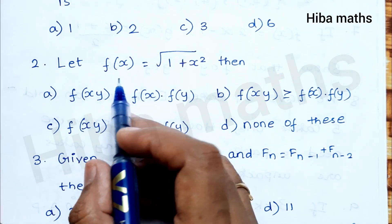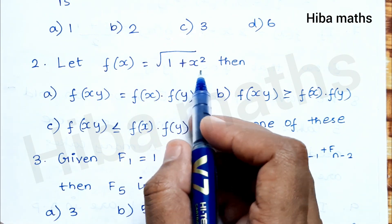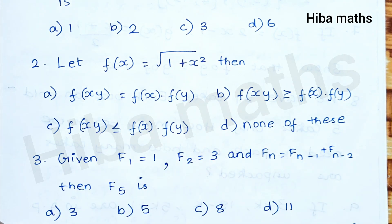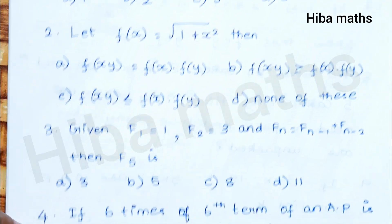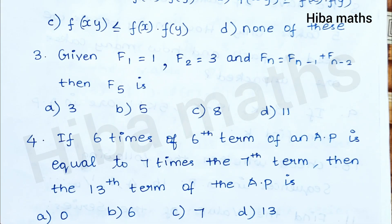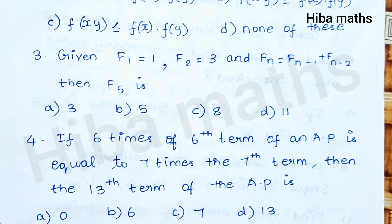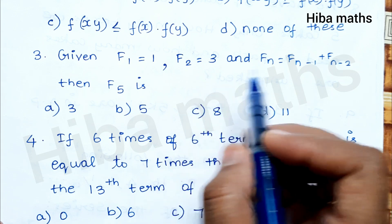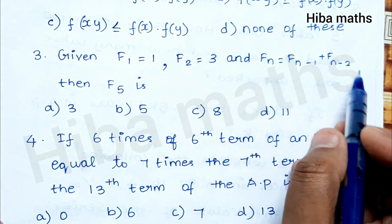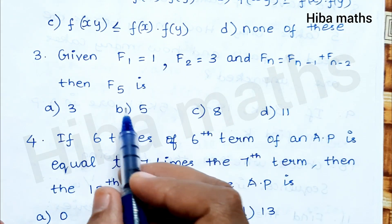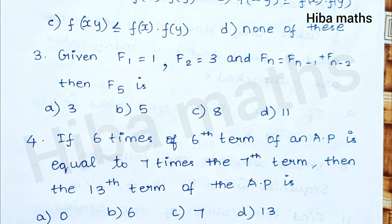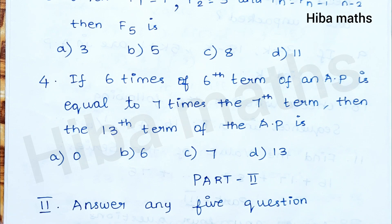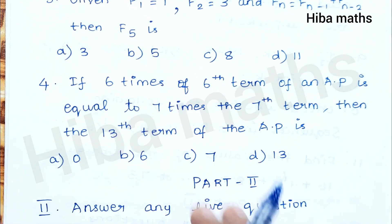Let f(x) = √(1 + x²). Then there is a given option. f(1) = 1, f(2) = 3. Then you will have to substitute f(5) to solve the answer.